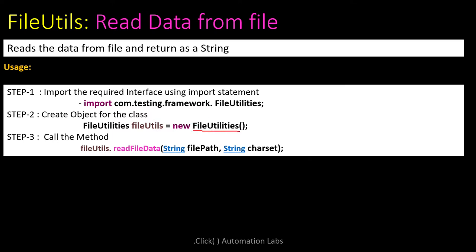This class is inside the automation utilities pro 1.0 jar file. Once you add it to the class path, you can import com.testing.framework.FileUtilities into your code. Then create one object for the FileUtilities class — the object name is fileUtils — and through that object you get access to readFileData.